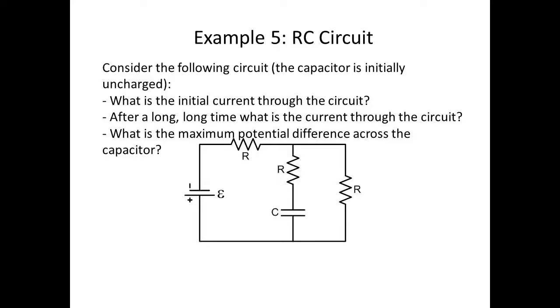Here's our fifth example with capacitors. We are given a circuit that has an EMF and three equal resistors, and a capacitor. In that circuit, we want to know what's the initial current through the circuit, and after a long, long time, what is the current through the circuit, and what is the maximum potential difference across the capacitor.